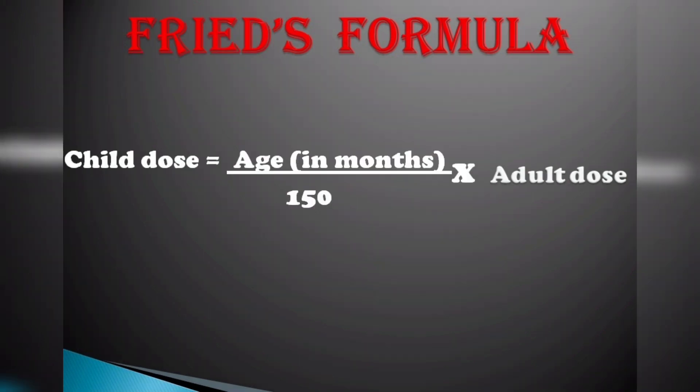The third is Fried's formula, where child dose is equal to age in months divided by 150, multiplied by the adult dose. Note that age in months is used — this applies to infants. This is an objective-type question: if the formula uses age in months, the options would be Young's formula, Dilling's formula, Clark's formula, or Fried's formula.